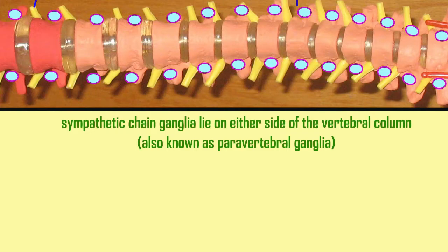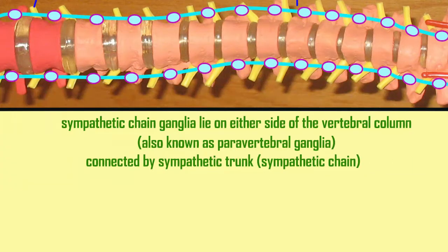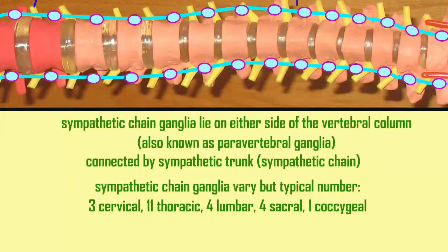They are connected by axons known as sympathetic trunks or sympathetic chains. The number of sympathetic chain ganglia can vary, but a common number would be 3 in the cervical region, 11 in the thoracic, 4 in the lumbar, 4 in the sacral, and 1 in the coccygeal region.